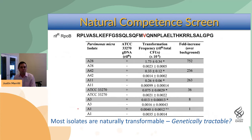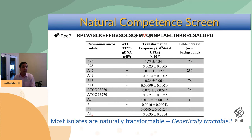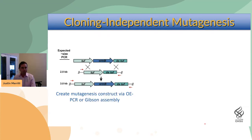Most of our isolates of Parvomonas, including the ATCC strain, do have various levels of natural competence that we could detect — except for clinical isolate A1. So the next question was: are these genetically tractable?